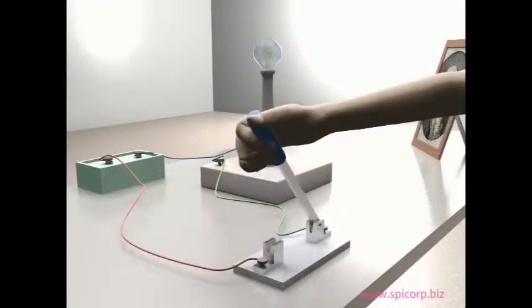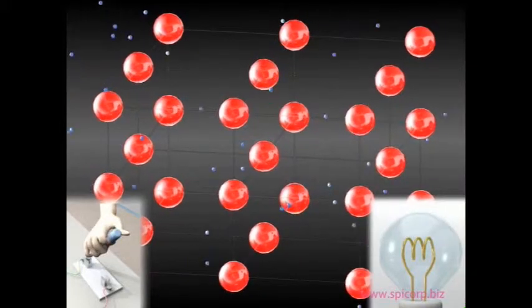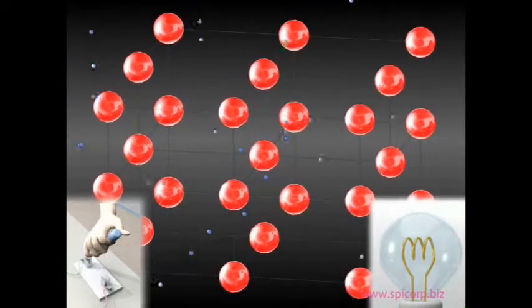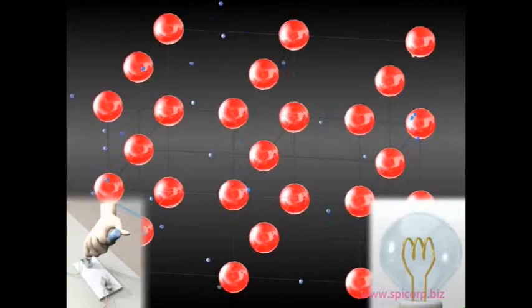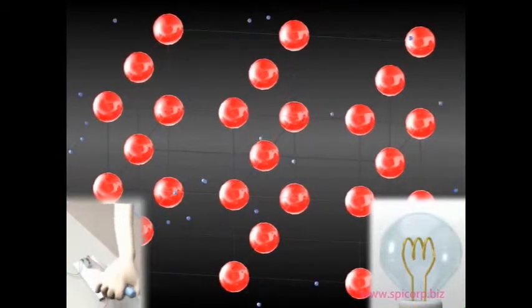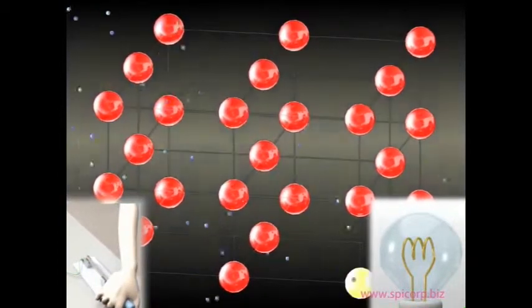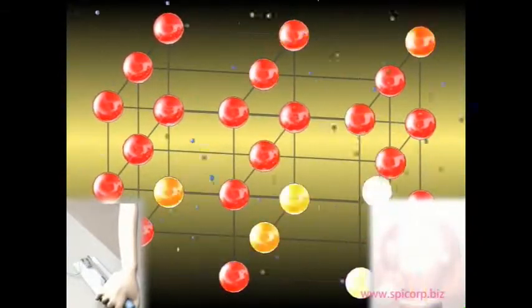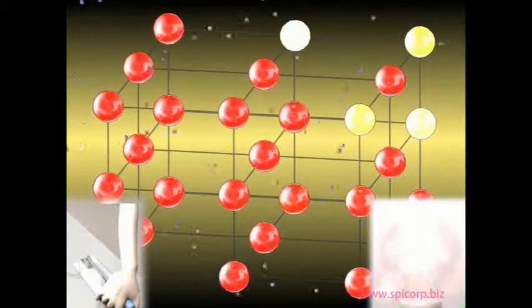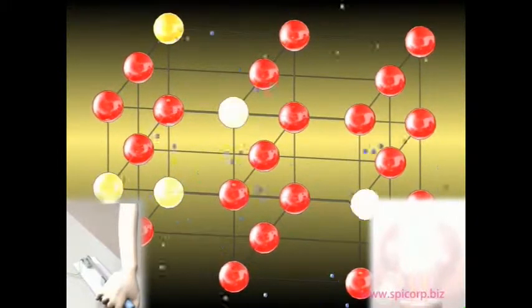The conductivity of a material is dependent on how willing its component atoms are to release electrons. For good conductors, the number of free electrons is large. These electrons flow freely through the material, and when an electric force is applied, they experience a drift velocity and begin to move through the conductor to transmit electricity. In order for current to flow, the free electrons must travel through the material with as little interference as possible.